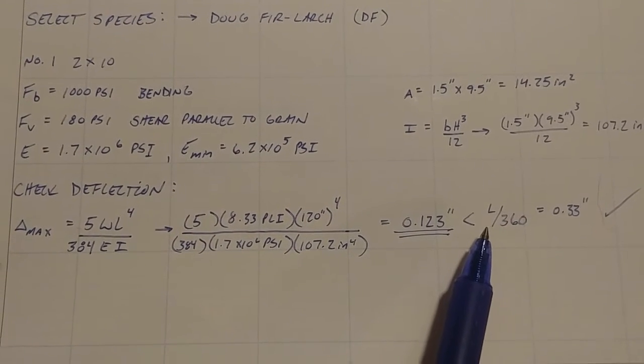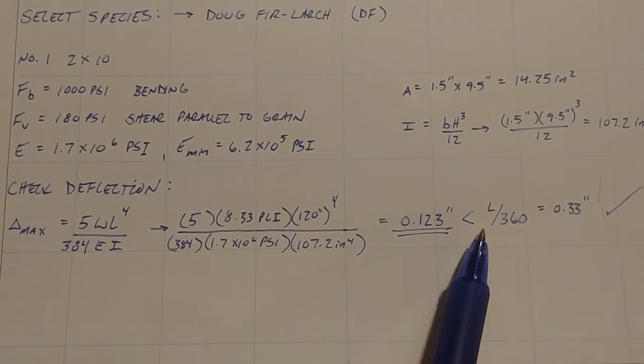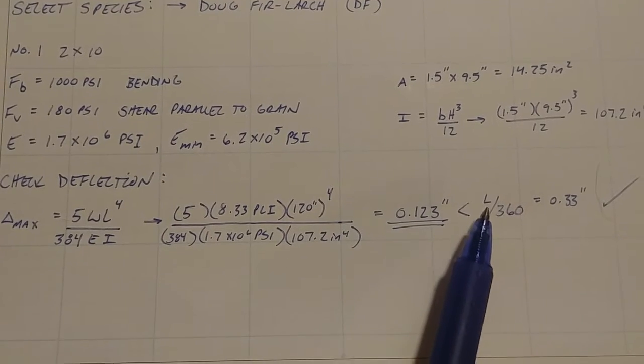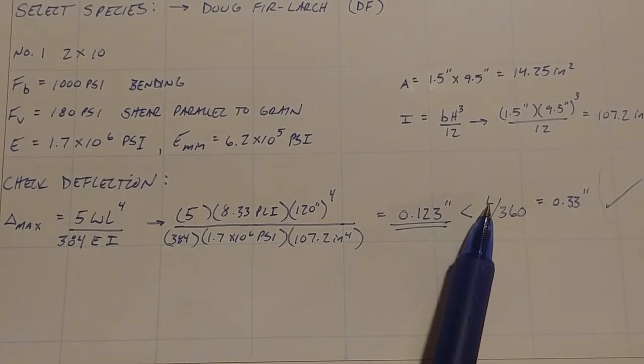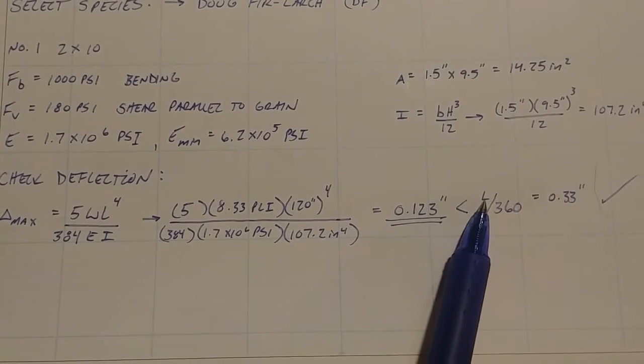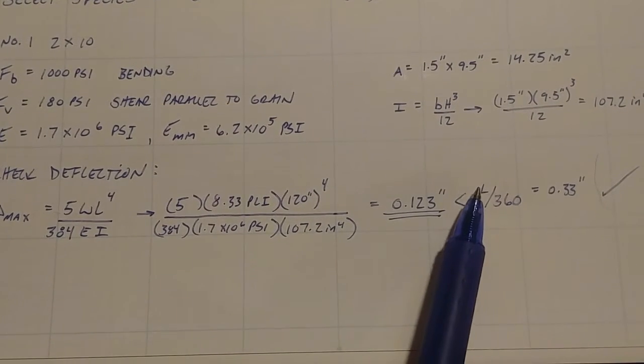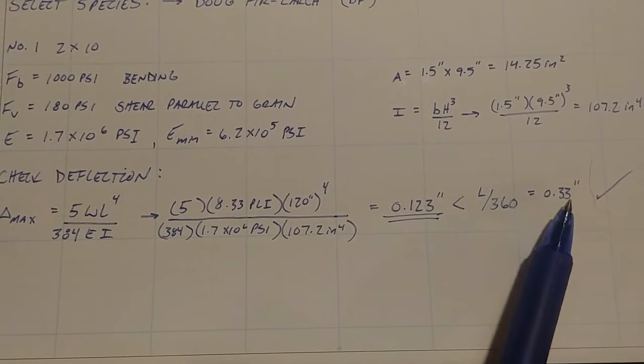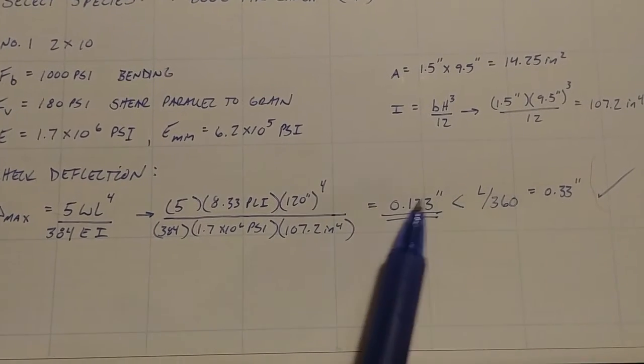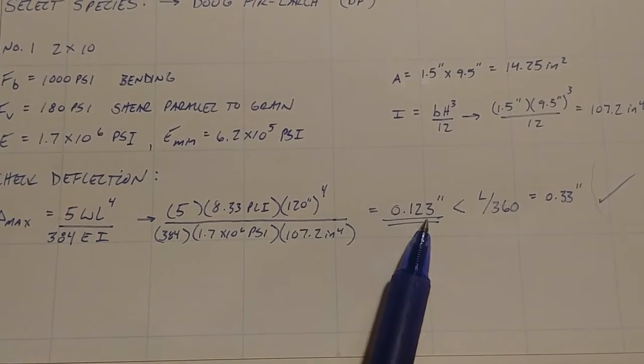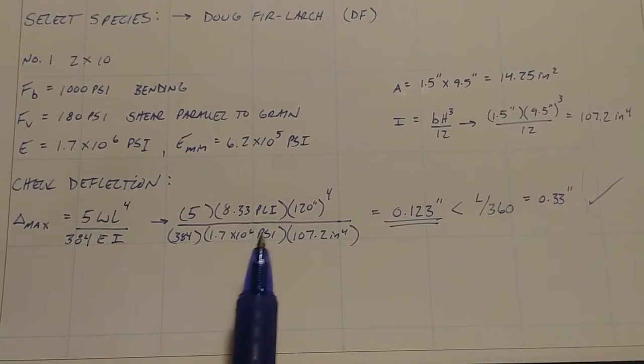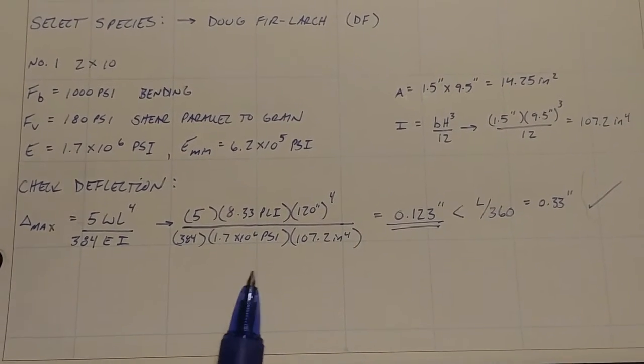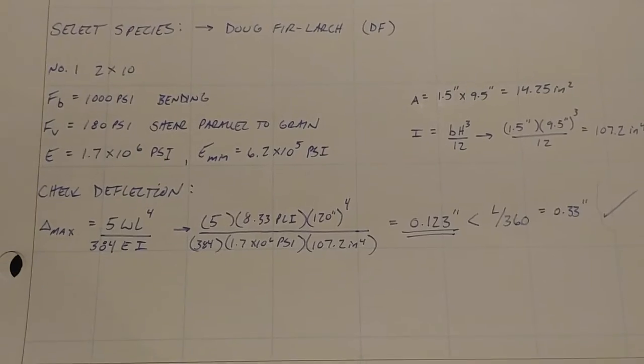And we're going to use a criteria of, it's pretty common, L over 360. So your length, so your 10 foot span is what we're designing for or 120 inches. So 120 inches over 360 equals 0.33 inches. So that's the max deflection that we can have. We have 0.123. So we're under that. So we're good. So the beam at least passes in deflection. Now we need to check its bending strength.